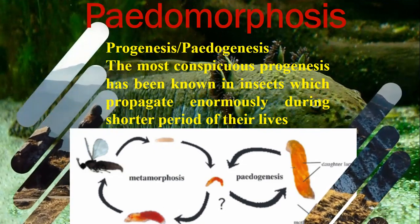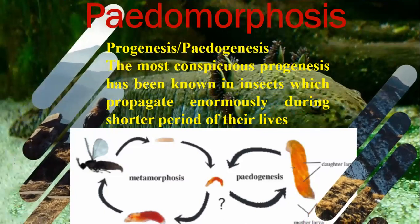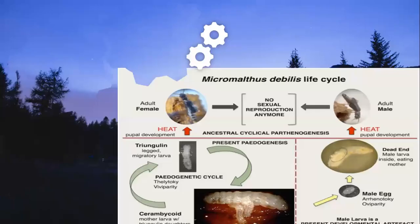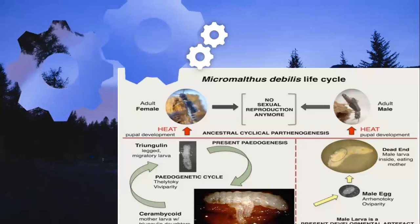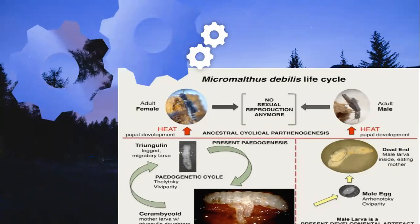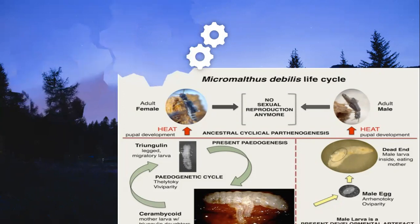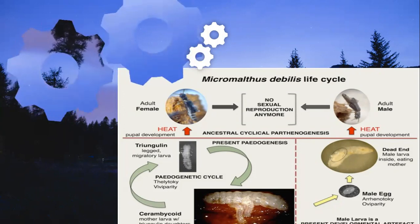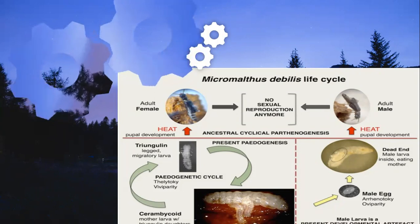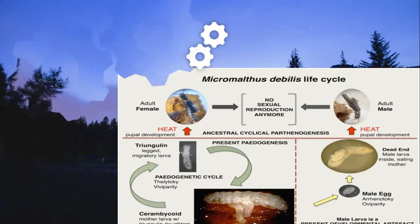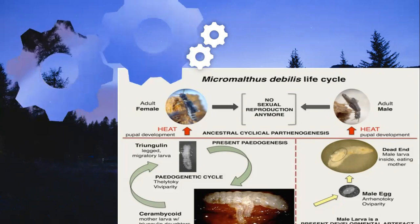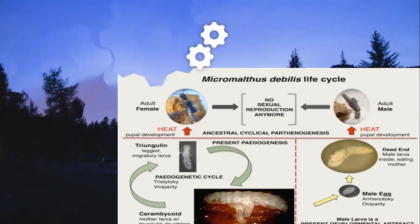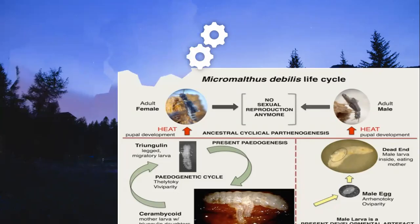Progenesis involves reproduction at an early stage, which is a single combination. Micromyalthus debilis is a common example of the pedogenetic cycle, which is a cycle seen in the absence of normal reproduction — a parthenogenesis-type cycle producing a new larval form from larvae.